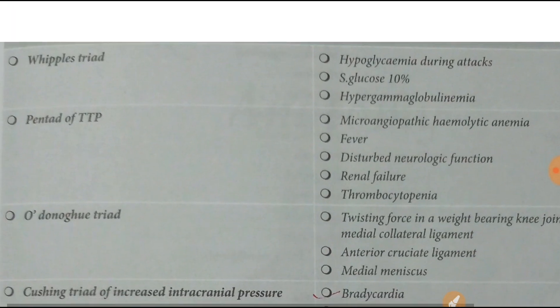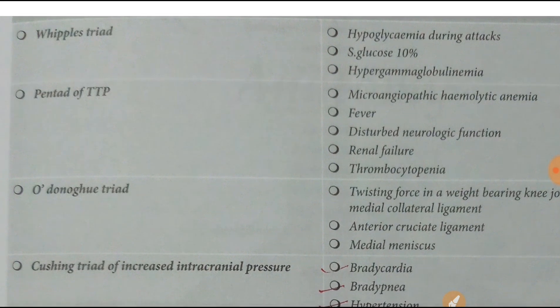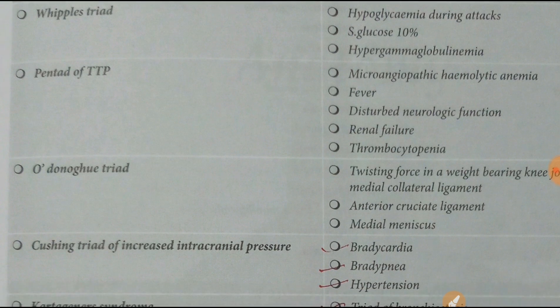Next one is Whipple's triad: hypoglycemia during attack, serum glucose decreased (below 10%), and hypergammaglobulinemia. In Whipple's triad, gamma globulin is increased while serum glucose decreases.